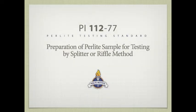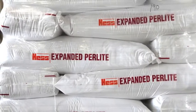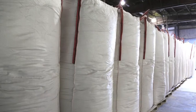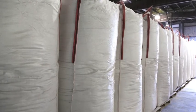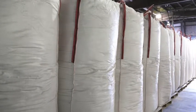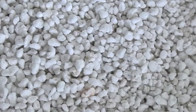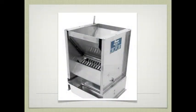Procedure 112 is applicable to a sample of expanded perlite or perlite ore, which has been obtained from bags, the production stream, etc. The object is to reduce the sample to a size convenient for testing and yet representative of the original quantity. This method requires the use of a sample reducer, splitter, or riffle.